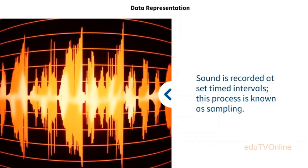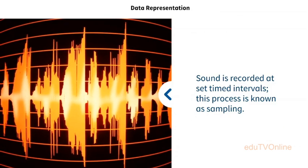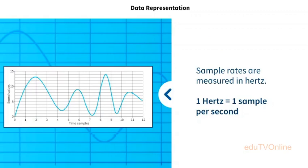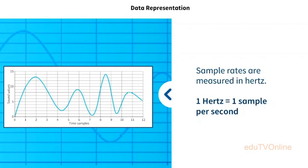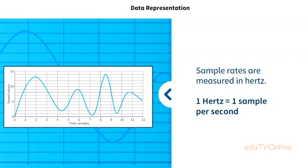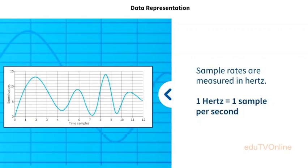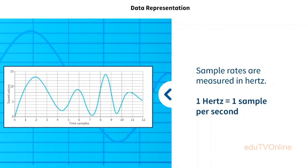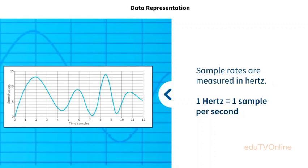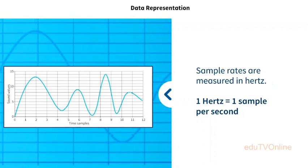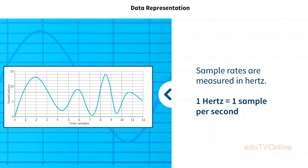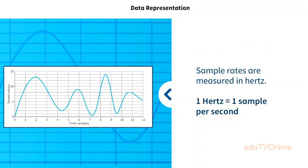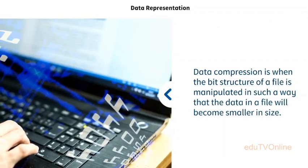If the set timed intervals are closer together, the soundtrack will be higher in quality — simply with more samples, the sound can be more accurately captured. Sample rates are measured in hertz. One hertz equals one sample per second. A telephone communication samples a voice at eight thousand hertz, but a higher quality recording such as a CD samples music at forty-four thousand, one hundred hertz.